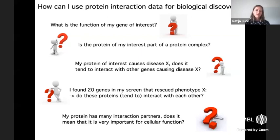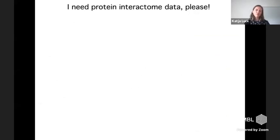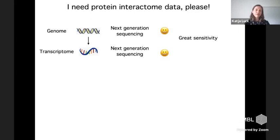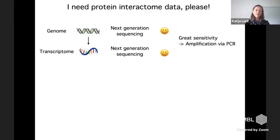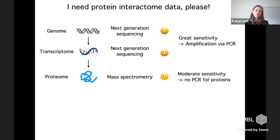To answer these questions, we ideally need a comprehensive set of protein interactions — a protein interactome dataset. In analogy to the genome or transcriptome, we have great technology thanks to next-generation sequencing to easily obtain the genome sequence or transcriptome from your sample with great sensitivity, because we have PCR that can amplify even lowly abundant DNA molecules. When it comes to the proteome, mass spectrometry is a nice technology to give you all the proteins in your sample, albeit at reduced sensitivity, because we have no PCR for proteins — we cannot easily amplify lowly expressed proteins.